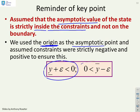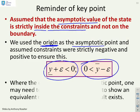And we assumed that the constraints were strictly negative and positive to ensure that that worked. So in other words, in essence, what we're doing is things like this. We're assuming that y under bar plus epsilon, where epsilon is some small positive number, is less than zero. And similarly, y over bar minus epsilon is greater than zero.